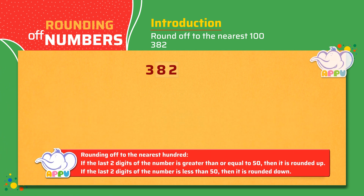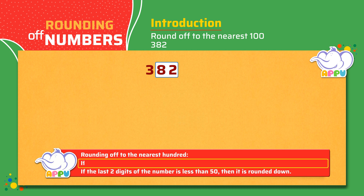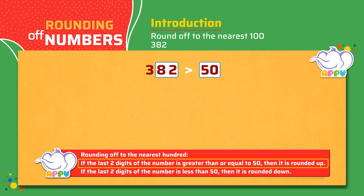Here 82 is greater than 50. 382 rounded to the nearest 100 is 400.